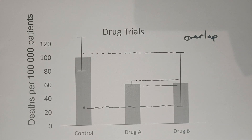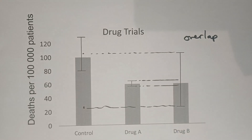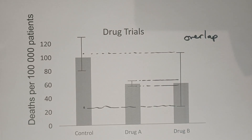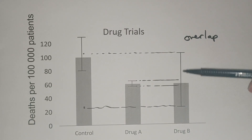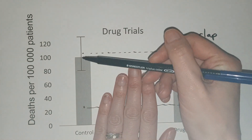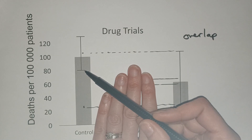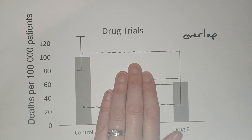So the first thing that we look for is what's the basic trend. These ones had more deaths, these ones went down. So our basic trend is done from means — without the error bars, we were able to come up with our basic trend. The next thing we look for is: do they overlap? Yes, they overlap, and this is a significant overlap between drug B and our control. So that means that sometimes when people weren't given any treatment at all, they were more likely to survive than if we gave them drug B, which is definitely not something you want to put on your sales pitch.